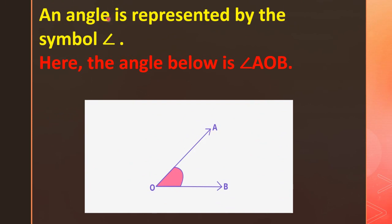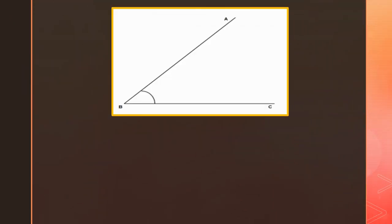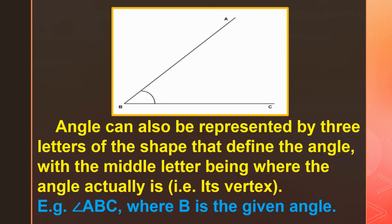An angle is represented by the symbol shown here. The angle below is angle AOB — this is the symbol of an angle. An angle can also be represented by three letters of the shape that defines the angle, with the middle letter being where the angle actually is — its vertex. For example, angle ABC where B is the given angle.